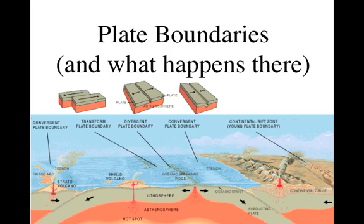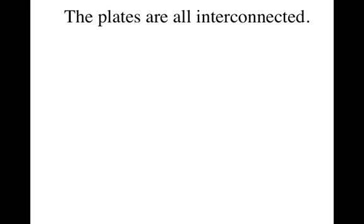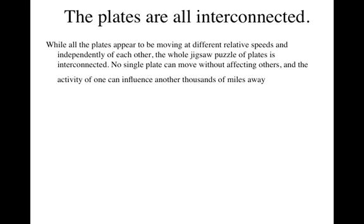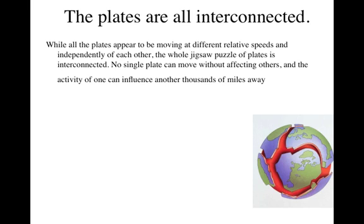Plate tectonic boundaries and what happens at each one. The plates we've talked about are made of lithosphere and they are actually all interconnected. We've been talking about them as separate plates, but if we look at the globe they appear to be moving at different relative speeds and independently of each other. But remember, it is an entire jigsaw puzzle of plates and they are interconnected. No one plate can move without affecting others, and the activity of one can influence another thousands of miles away.